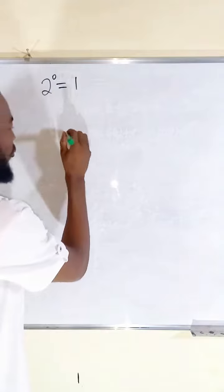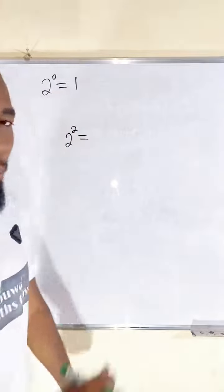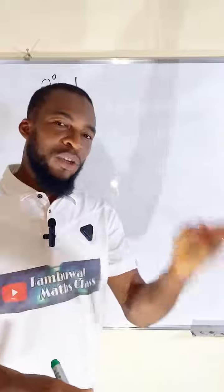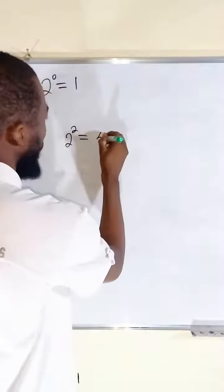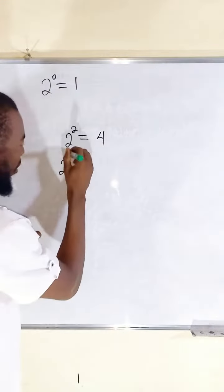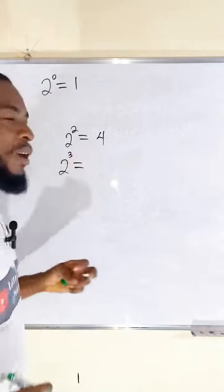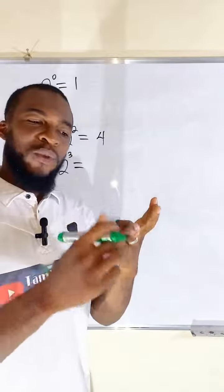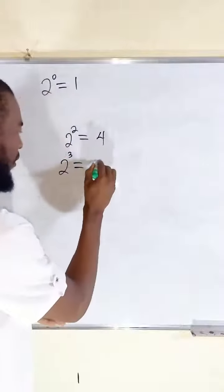Remember, 2 to the power of 2 is the same thing as 2 multiplied by 2, which equals 4. What about 2 to the power of 3? 2 to the power of 3 is 2 times 2, 4 times 2, which equals 8.